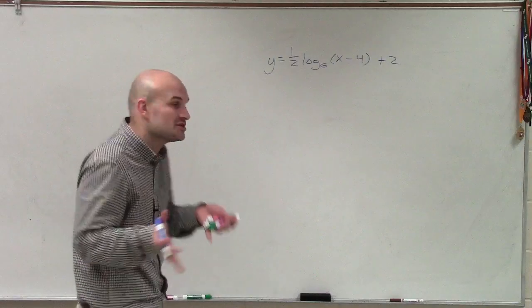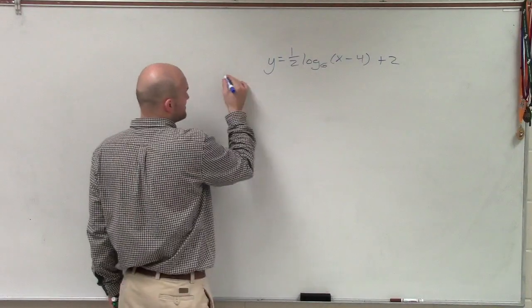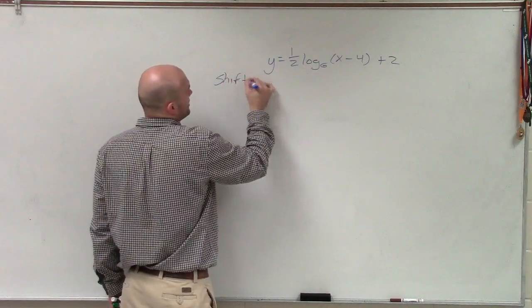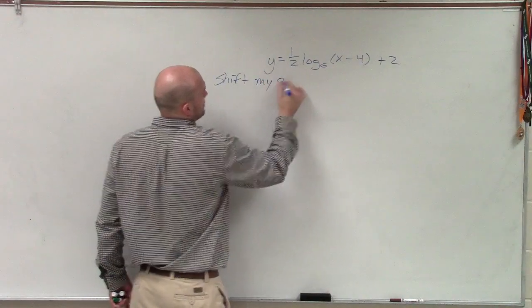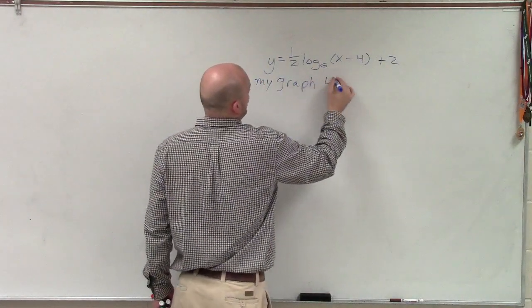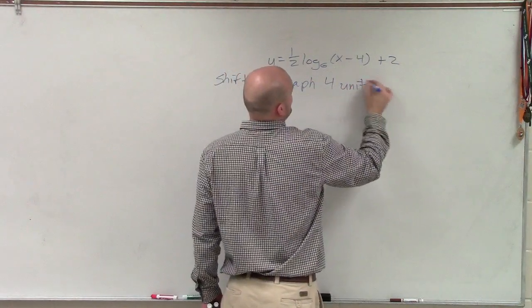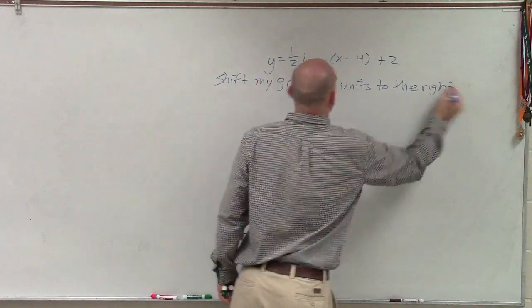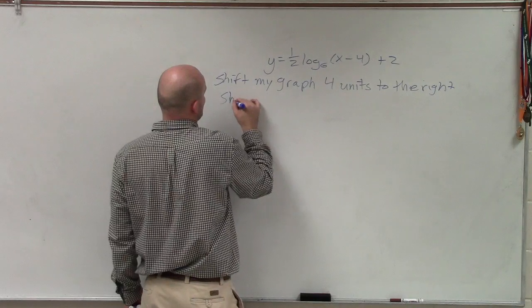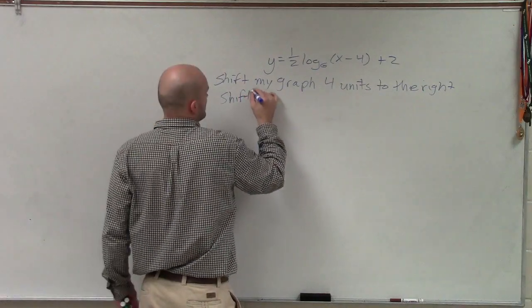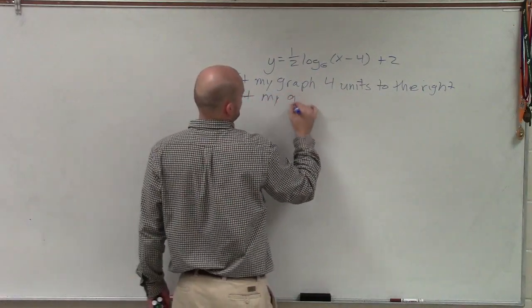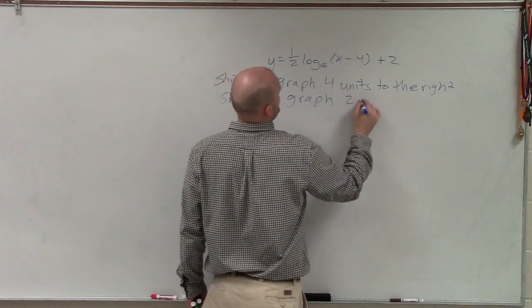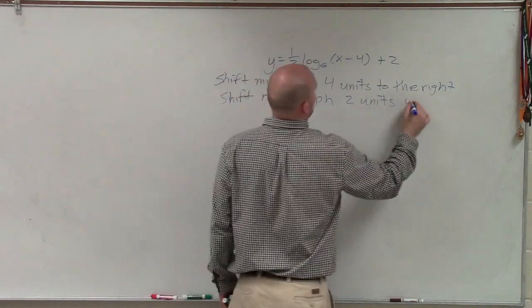And whenever I'm looking at a problem like this, I always want to kind of determine what are exactly my transformations. How am I shifting this graph from its original parent graph? Well, the x minus 4 is going to tell me I'm going to shift my graph four units to the right.